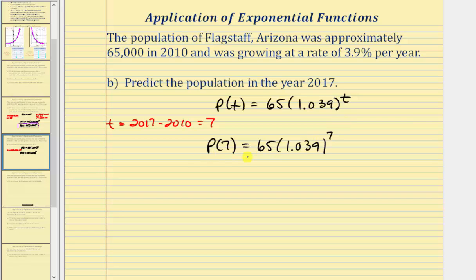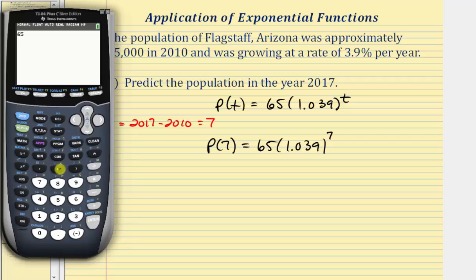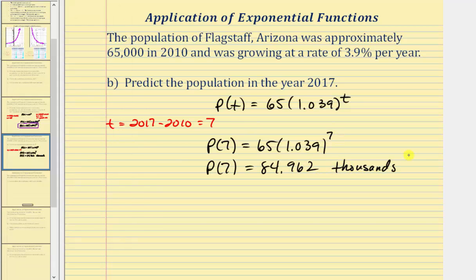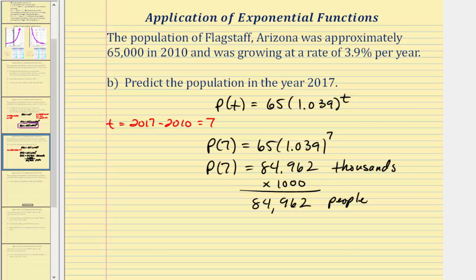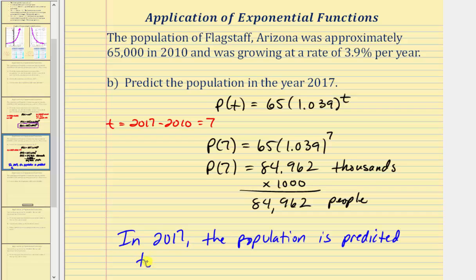We'll use the calculator to approximate this value. Remember, p of seven is in thousands. Entering 65 times 1.039 raised to the seventh power and pressing enter, we get approximately 84.962. Since this is in thousands, multiplying by 1,000 gives us 84,962 people. So in 2017, the population is predicted to be 84,962.